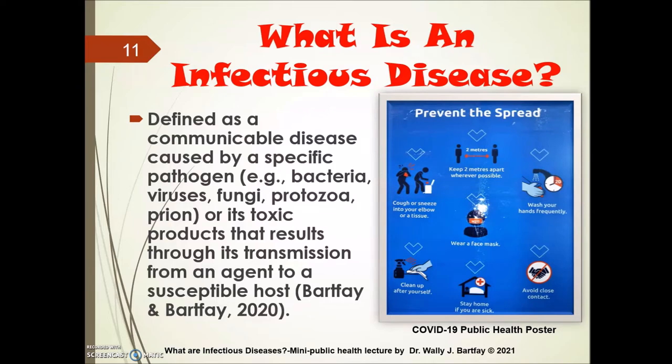So what is an infectious disease? We define an infectious disease as a communicable disease caused by a specific pathogen — which could be a bacteria, virus, fungi, protozoa, or prion — or its toxic products, that result through transmission from an agent to a susceptible host. From a public health context, we are always interested in preventing the spread of infectious disease.